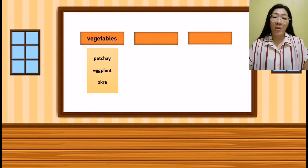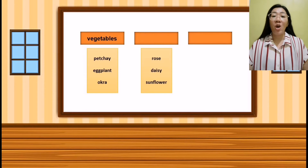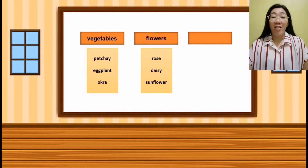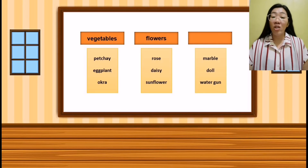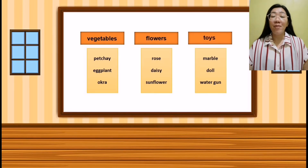Our next group of words are rose, daisy, and sunflower. They are flowers. And our last group of words are marble, doll, and water gun. They are toys.